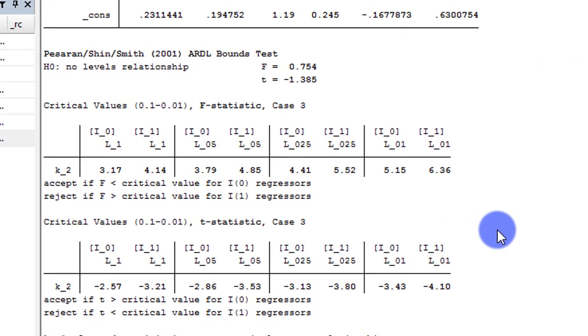So the only relevant result on this screen is the F-statistic. Remember the decision criteria? If the value of the F-statistic is higher than the I(1) bound, I reject the null hypothesis. But if the F-value falls below the I(0) bound, I cannot reject the null hypothesis. And if the F-value falls between the bounds, my test is considered to be inconclusive.